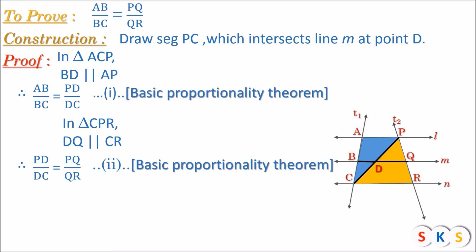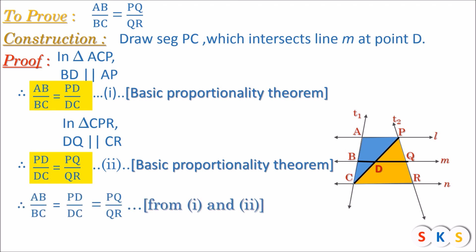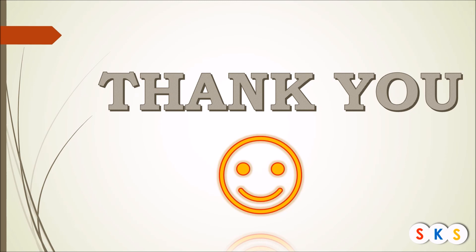Now look at equation 1 and equation 2. Both equations have one common ratio, that is PD upon DC. Therefore, all three ratios are equal: AB upon BC equals PD upon DC equals PQ upon QR. So I have proved it — the ratio of intercepts formed on transversal T1 is equal to the ratio of intercepts formed on transversal T2 by three parallel lines L, M, and N. This is called the property of three parallel lines and their transversals. Thank you.